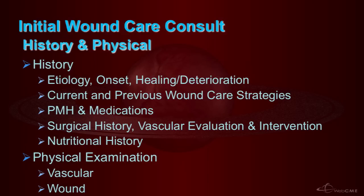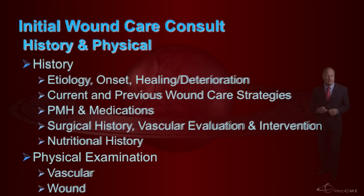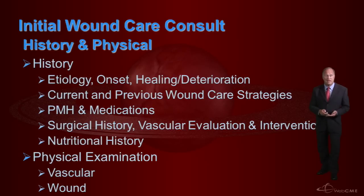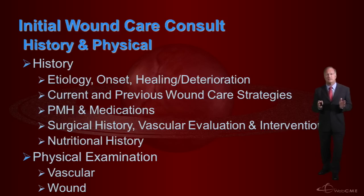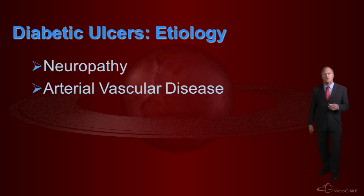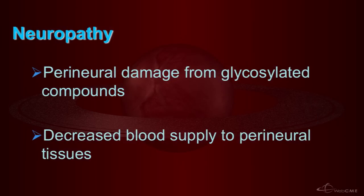When a patient with a diabetic foot ulcer comes into our clinic, we give them a complete assessment: a very detailed history looking at etiology, past medical history, surgical interventions, and nutritional history. We also perform a detailed physical examination — focusing on the wound, but one thing often forgotten is evaluation of peripheral arterial vascular disease. This needs to be assessed diligently. Diabetic ulcers are caused primarily by neuropathy and arterial vascular disease.